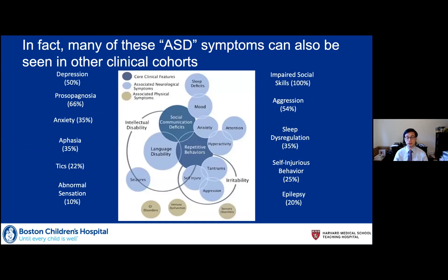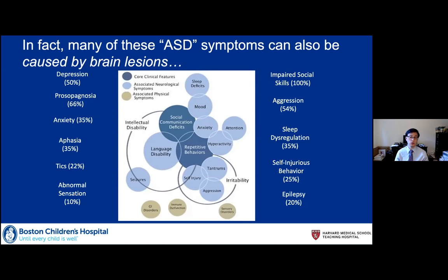Many of these autism symptoms can actually be seen in other clinical cohorts, so perhaps we can translate not from the bench to the clinic but from one clinic to another. More concretely, many of these symptoms can actually be caused by brain lesions, which is fascinating because then you have causal information: no symptom, brain lesion occurs, now you have symptom. The causal inference from that is much stronger than what you get from PET studies or fMRI, where a group of subjects has increased activity at one spot — you don't know if that's causation, compensation, or a biomarker.